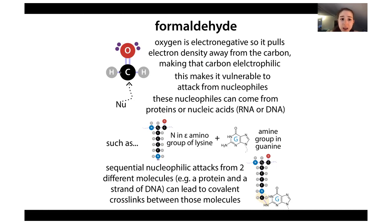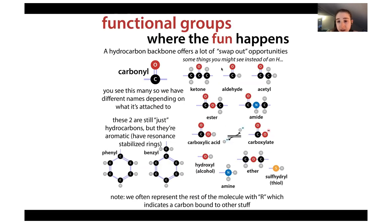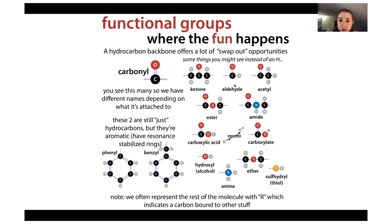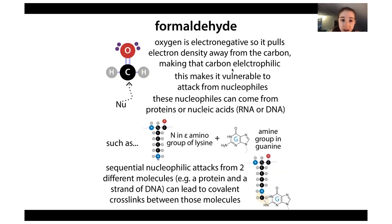Formaldehyde is the simplest aldehyde. An aldehyde is where you have a carbon double bonded to an oxygen and a hydrogen. It's one of the key functional groups - groups of atoms that form these common repeating things we see in chemistry and biochemistry, where together they have special functions. We can predict what type of reactions molecules with these functional groups will undergo.